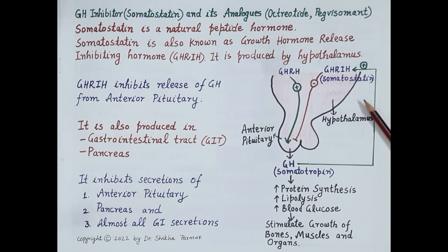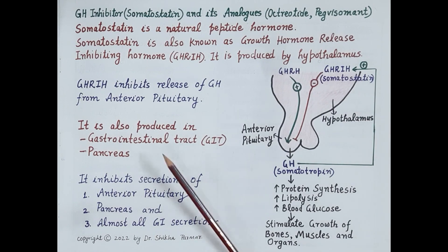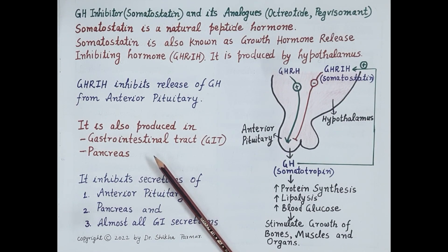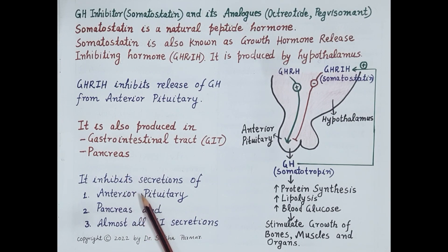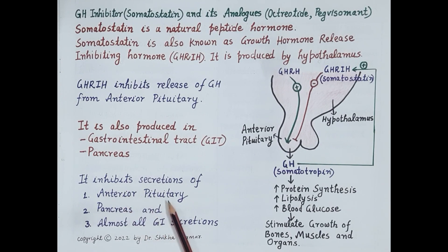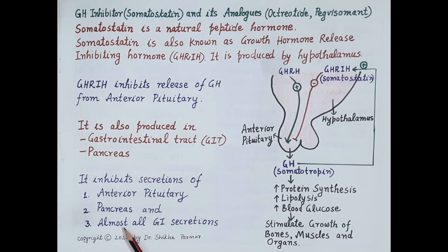In addition to the hypothalamus, somatostatin is also produced by the gastrointestinal tract and is secreted by the delta cells in the pancreatic islets of the pancreas. The primary function of somatostatin is to inhibit secretions of the anterior pituitary. It also inhibits secretion of the pancreas and almost all gastrointestinal secretions.